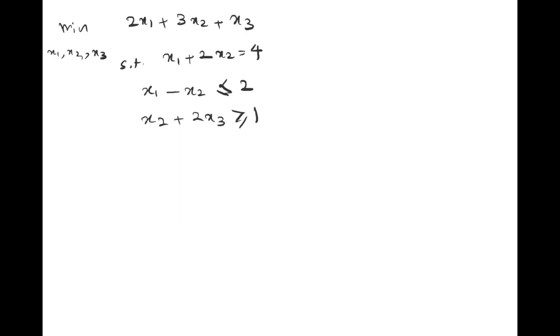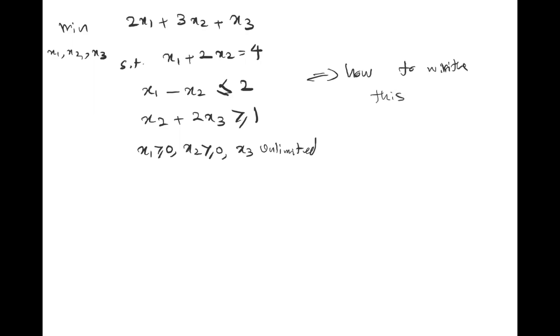Now, try to transform this example into standard format before continuing. The problem is: minimize 2x1 + 3x2 + x3, subject to x1 + 2x2 = 4, x1 - x2 ≤ 2, x2 + 2x3 ≥ 1, with x1 positive, x2 positive, and x3 unlimited. Pause the video and try to write this in the standard form of minimizing c^T x.